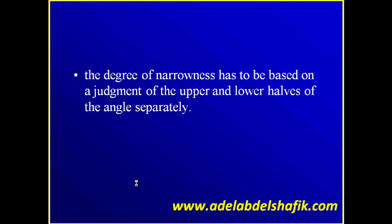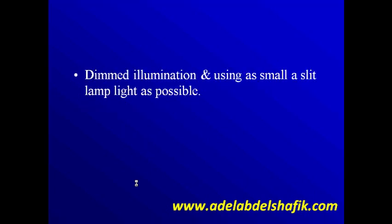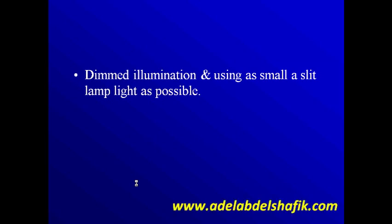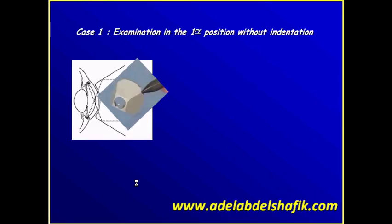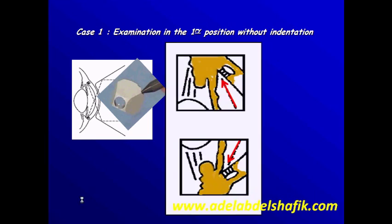Keep in mind you need to examine the upper and the lower halves. The amount of illumination used — you need to use minimal light, because maximum illumination causes miosis and the angle will be artificially open. You want to examine the patient in a more physiological situation, so the illumination is dim, and if you get the light slit short and shorter, you have less illumination. In this case, we start by asking the patient to look straight ahead — primary position — using the Posner lens without any indentation. As you can see, in the upper half and in the lower half the trabecular meshwork is visible, so this is an open angle.